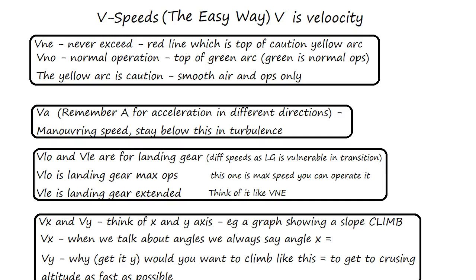VNE is self-explanatory - never exceed. In other words, that's the red line at the top of your arc, the top of the caution arc. The red line is the never exceed. The yellow is the caution arc, so just fly there in smooth conditions.